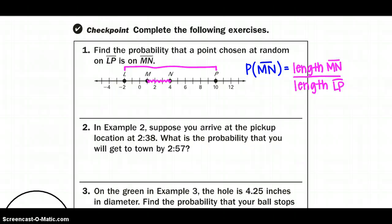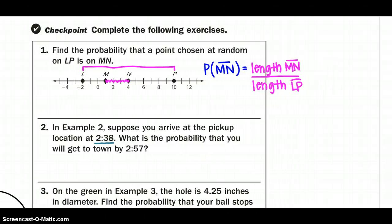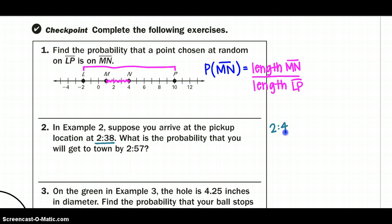On number two, in example two, suppose we arrive at the pickup location at 2:38. We want to find the probability we'll get downtown. So we need to figure out how long we can wait before we need to get on the bus. And remember, we have to get on the bus by 2:44 to make it down 13 minutes, to make that ride of 13 minutes. So we're going to now subtract 2:44 from 2:38, which gives us 6 minutes to wait.